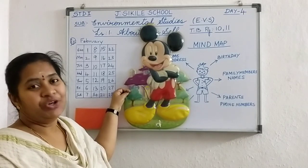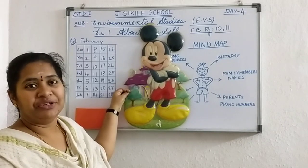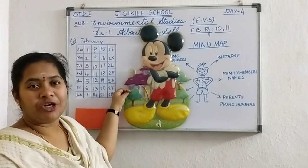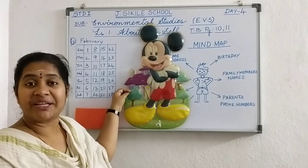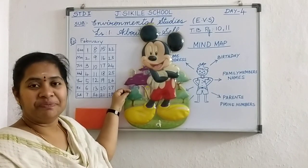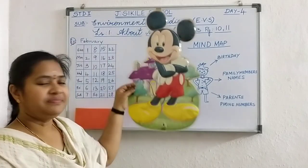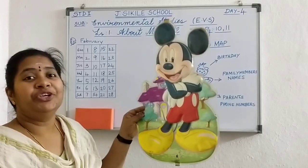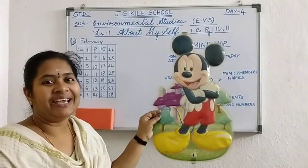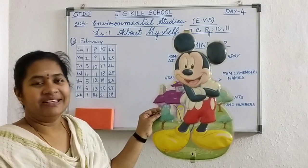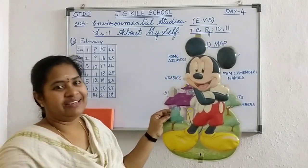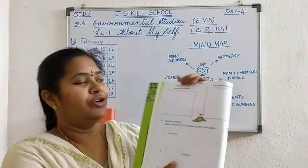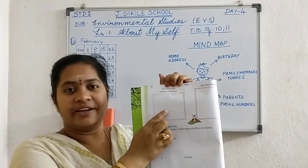Doraemon you all like, Pokemon, Bheema — you all like these characters. Spider-Man is one character, Batman is another character. You all like these cartoons to watch. Now it's time to draw — not only watching, you have to draw the cartoon which you like. The cartoon character which you like. Take your parents' help and you can draw your favorite cartoon character in this box.